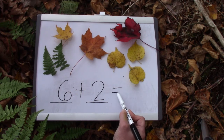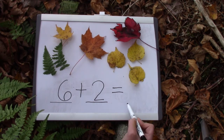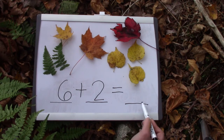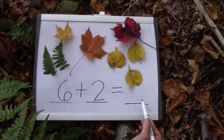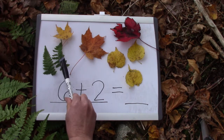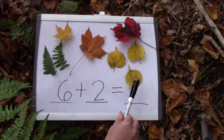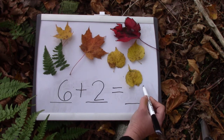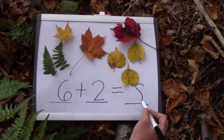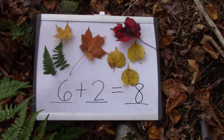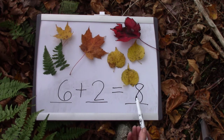Six plus two. Do you remember what we write next? It's our equals symbol. Now we need to write down how many we have altogether. Let's count them — one, two, three, four, five, six, seven, eight. Six plus two is eight. We just wrote a number sentence for a 'some and some more' story. Well done.